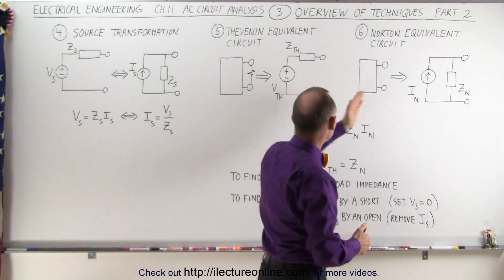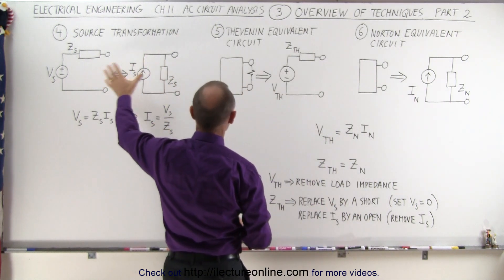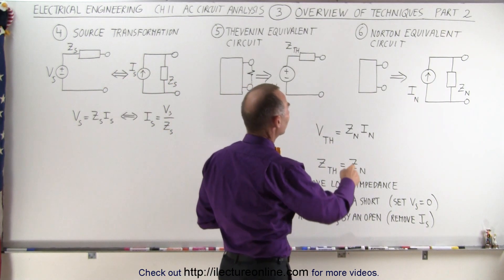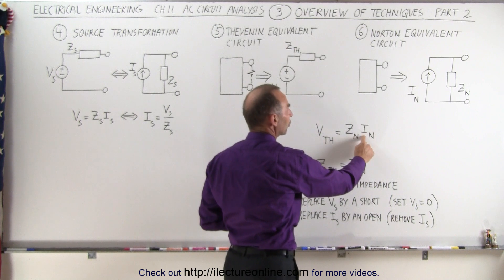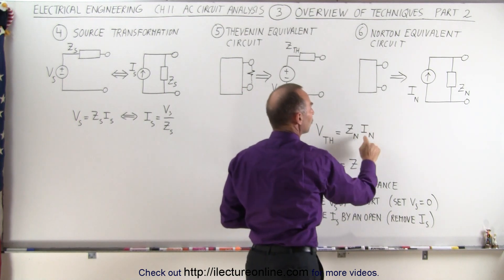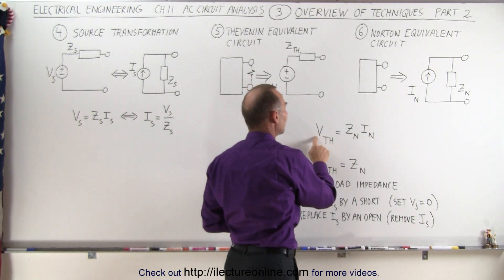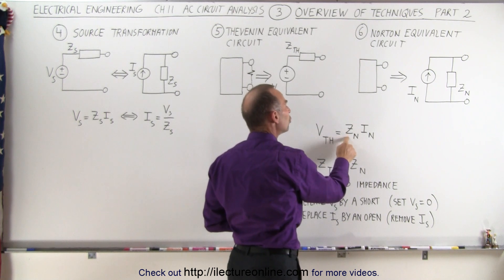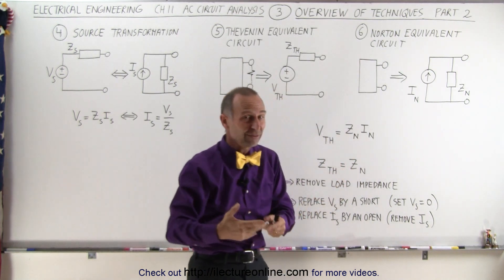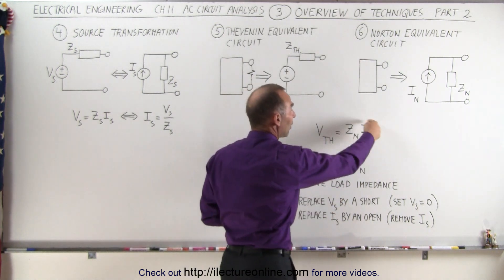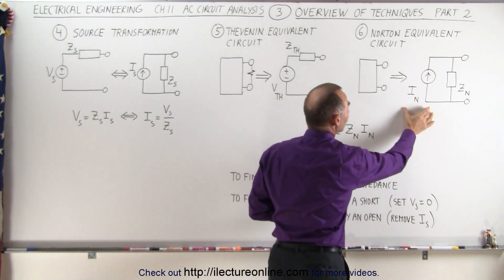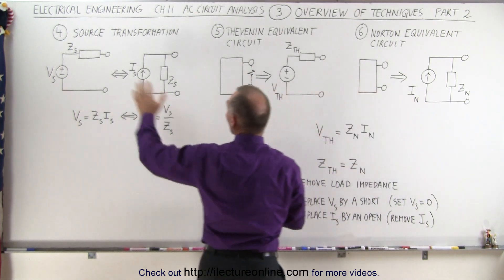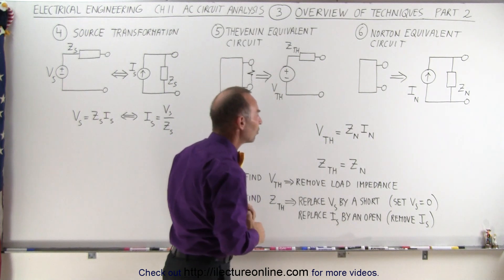But then to get the Thévenin voltage—or in this case, the Norton current, I should say—what we do is we use the same technique as we do over here where we have a source transformation technique, where we can see that the relationship to find the current in the equivalent Norton circuit is equal to the Thévenin voltage divided by the Norton impedance, which of course is the same as the Thévenin impedance. So this is how we can then find the Norton current in the circuit, basically using a source transformation technique to do that.